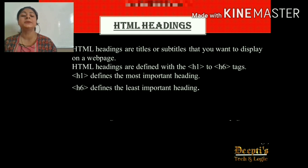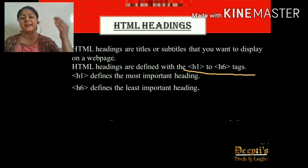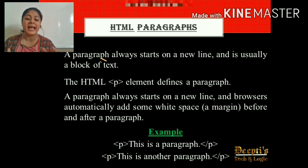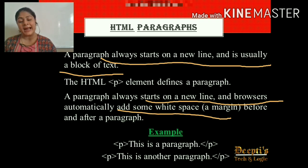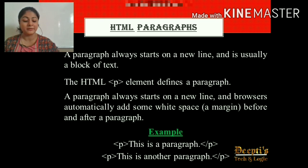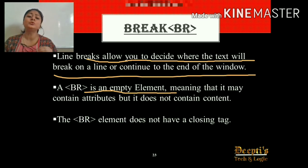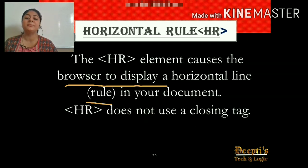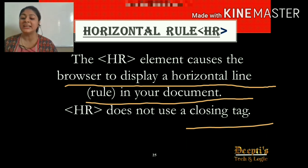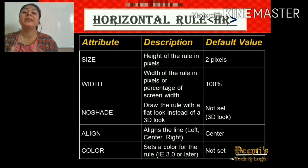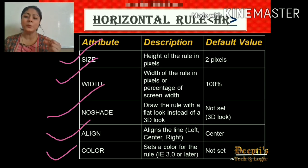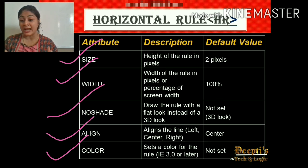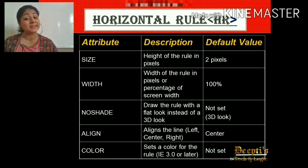HTML headings are defined with h1 to h6 tags, where h1 is the most important heading and h6 is the least important. The paragraph tag starts with a new line and the browser automatically adds some white space or margin before and after a paragraph. The break tag is an empty tag that lets you decide where text will break on a line. The HR element causes the browser to display a horizontal line in your document. HR does not use a closing tag. We have many attributes of horizontal rule, like size, width, no-shade, and alignment.